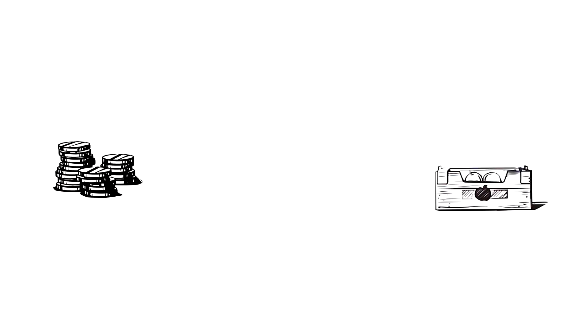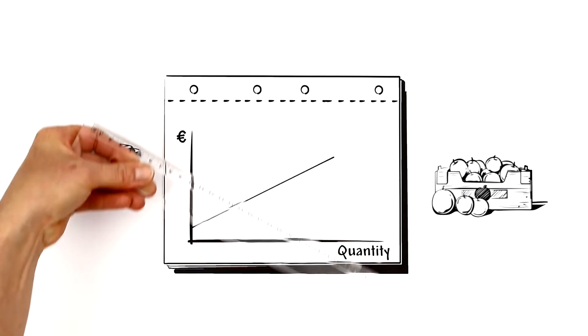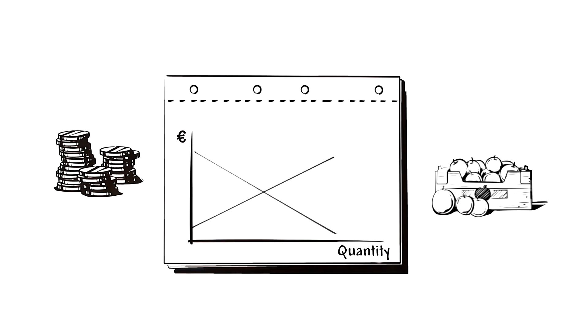When both of these needs are met, there is a point of intersection between supply and demand which is referred to as the equilibrium price.